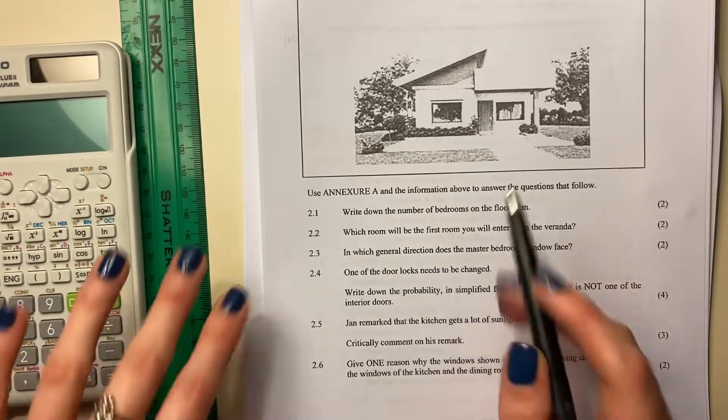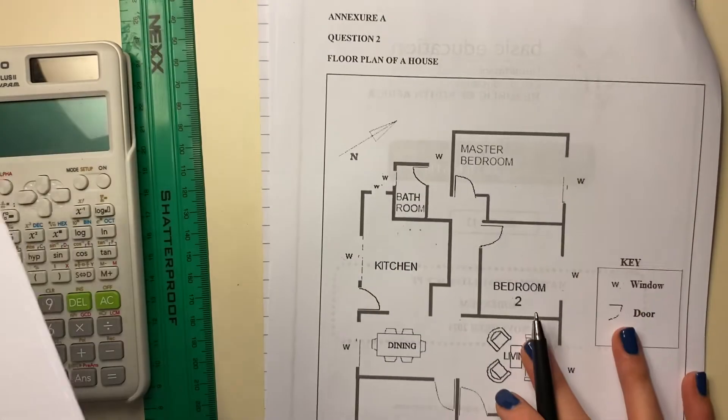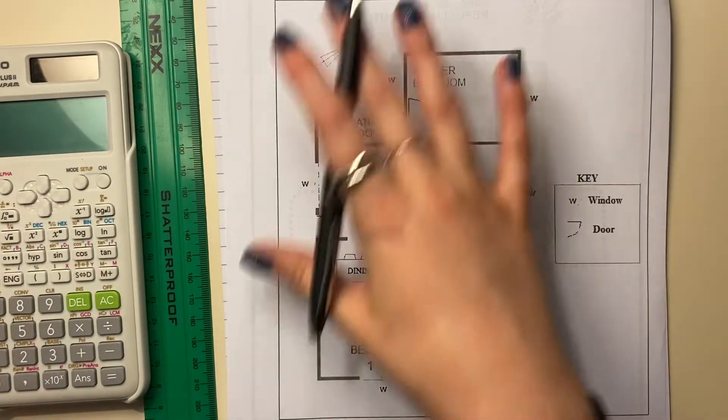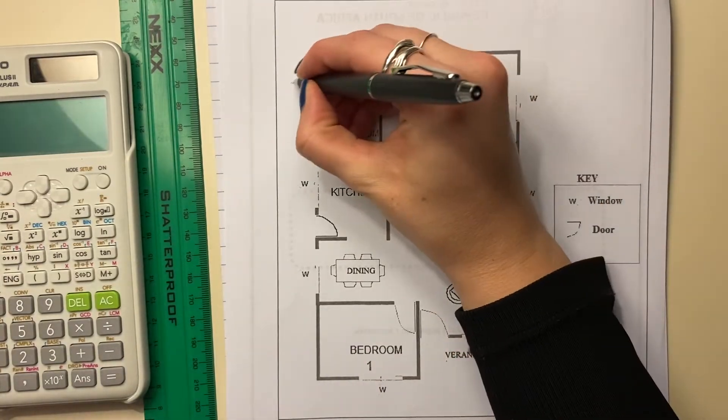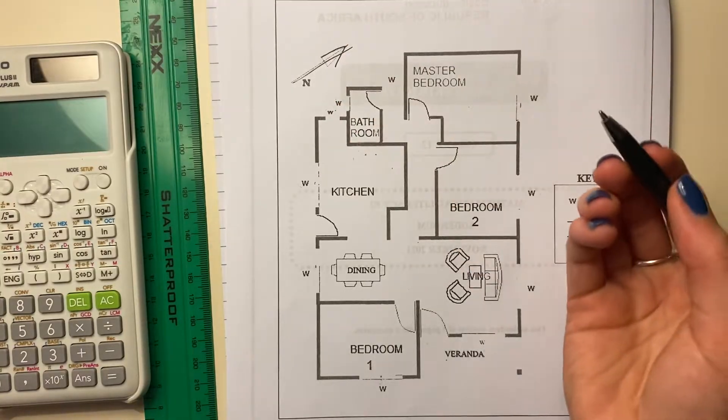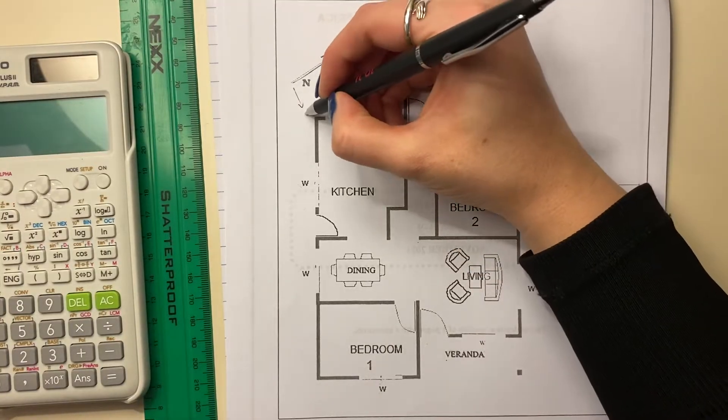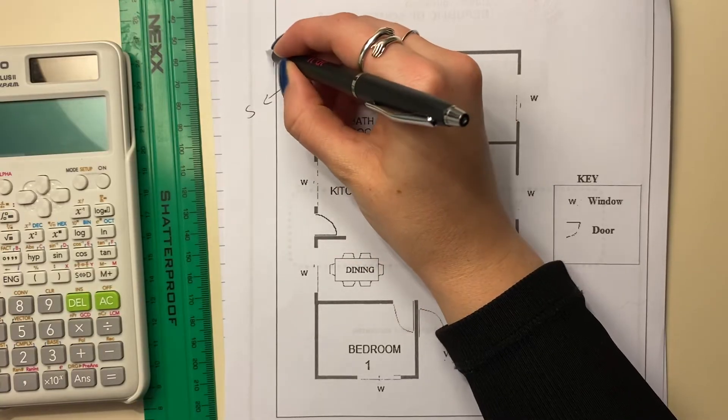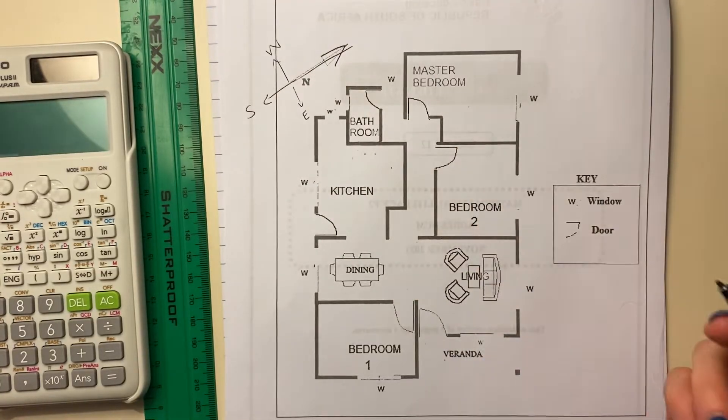Write down the number of bedrooms on the floor plan. Here's the floor plan. Let me just make sure you can see it. There's the floor plan. So notably, whenever you're working with this, note where North is. So there's North. Wow, I messed up that arrow. There would be East, there would be South and there would be West. Because remember, you go in clockwise direction.